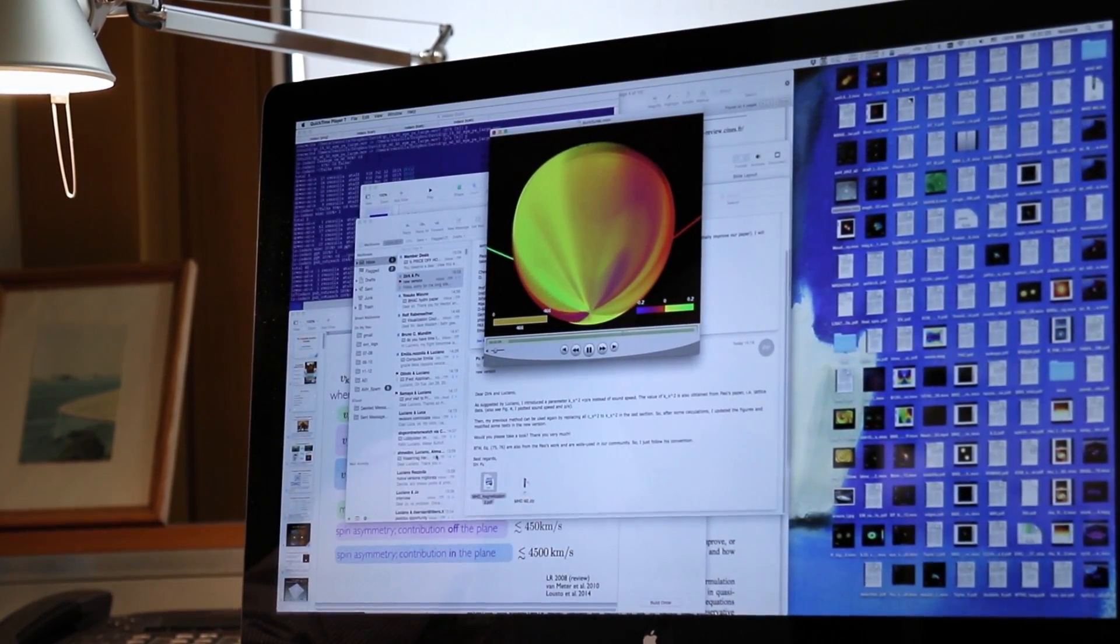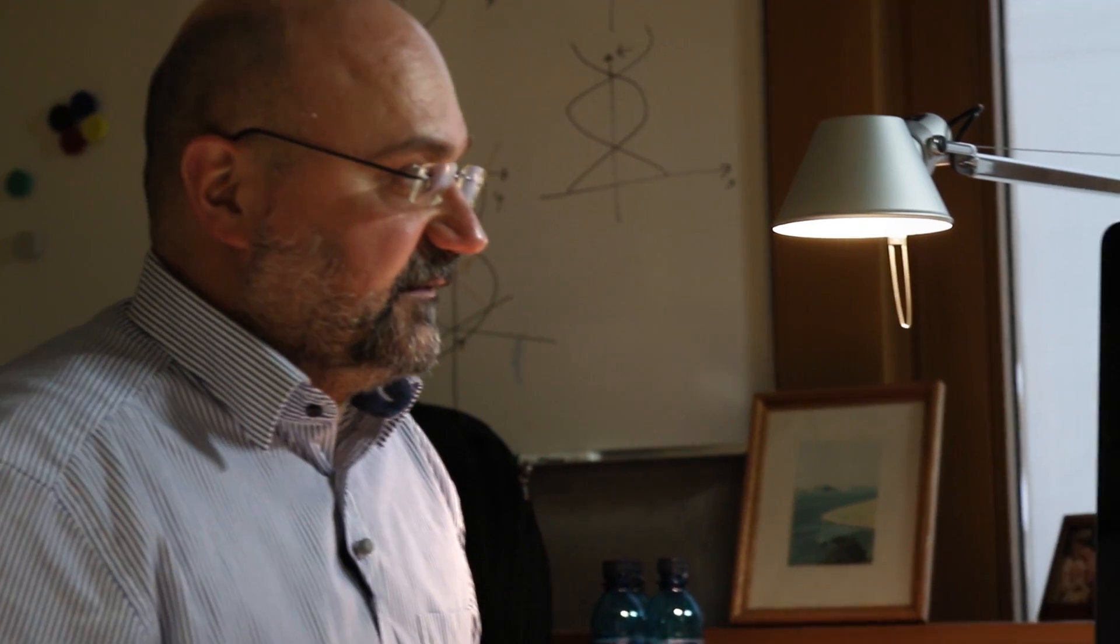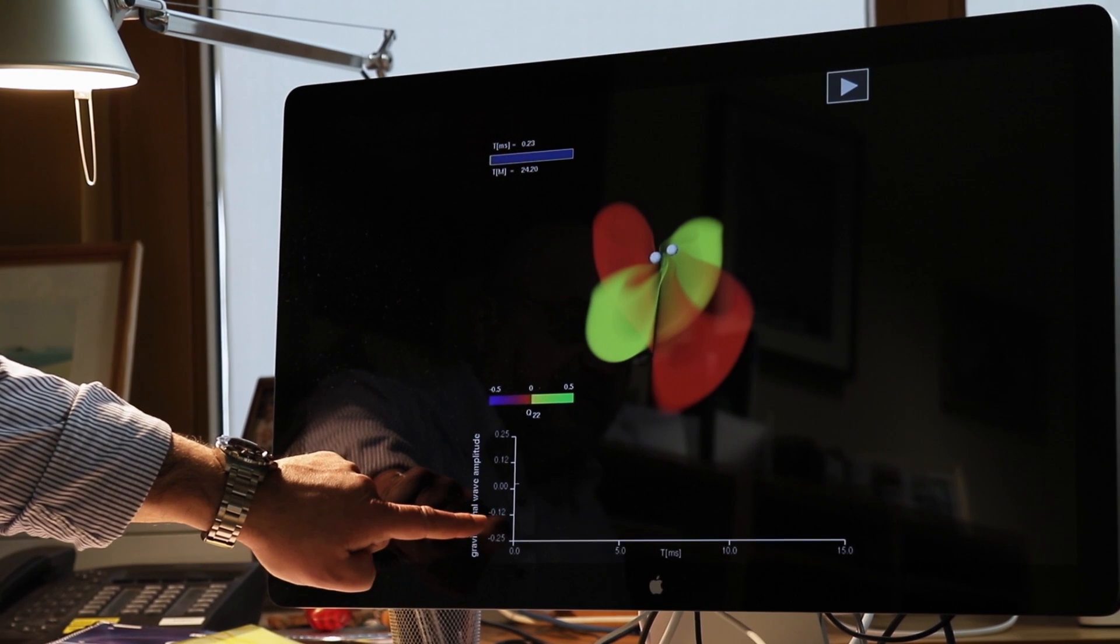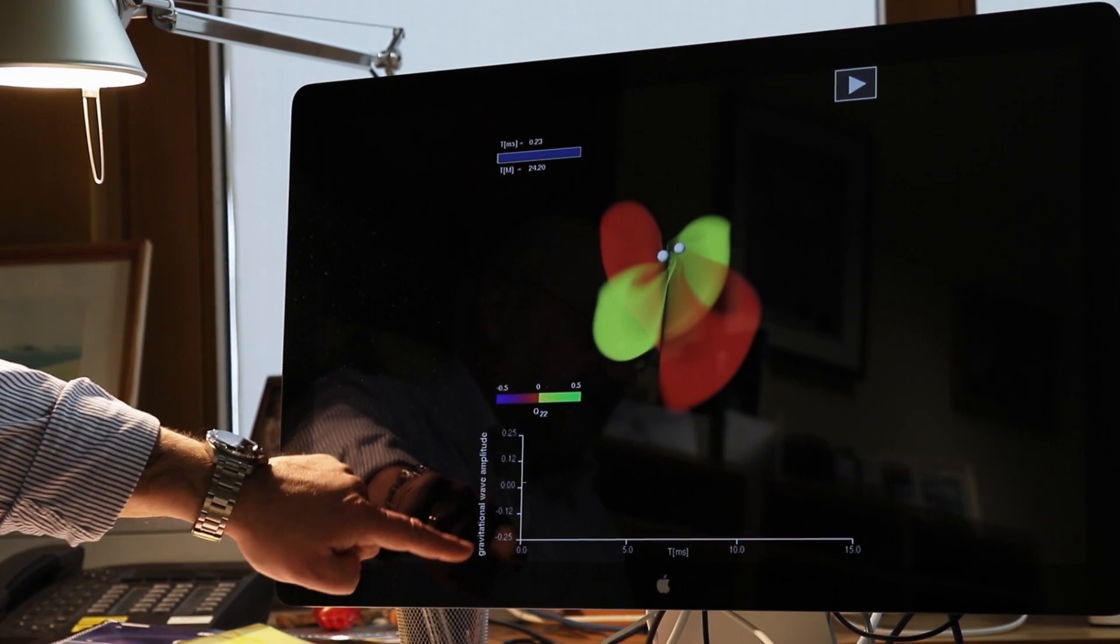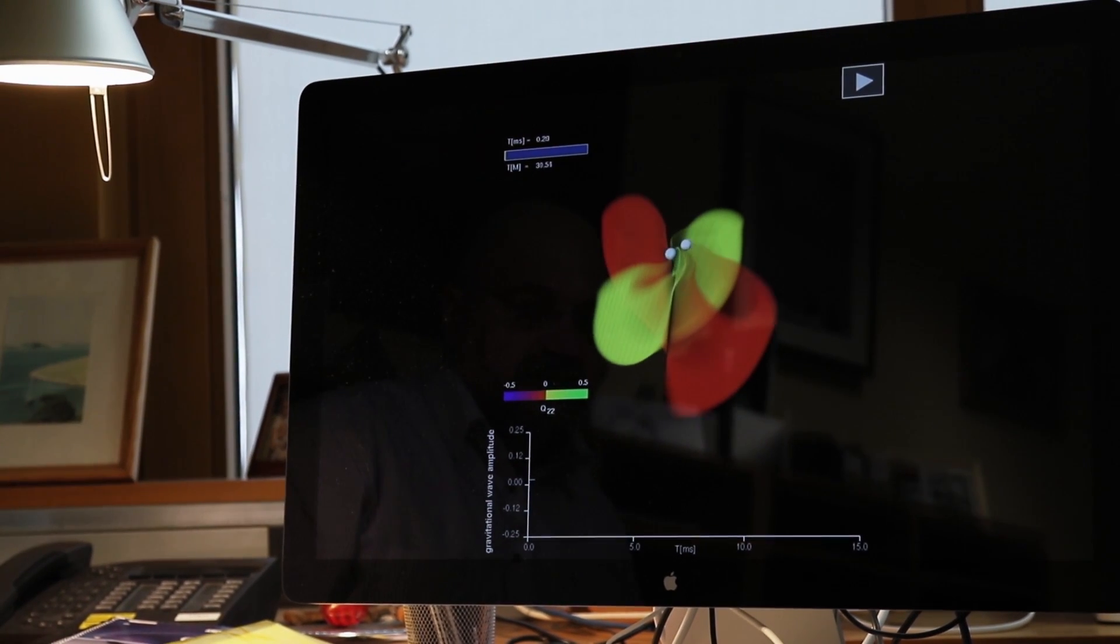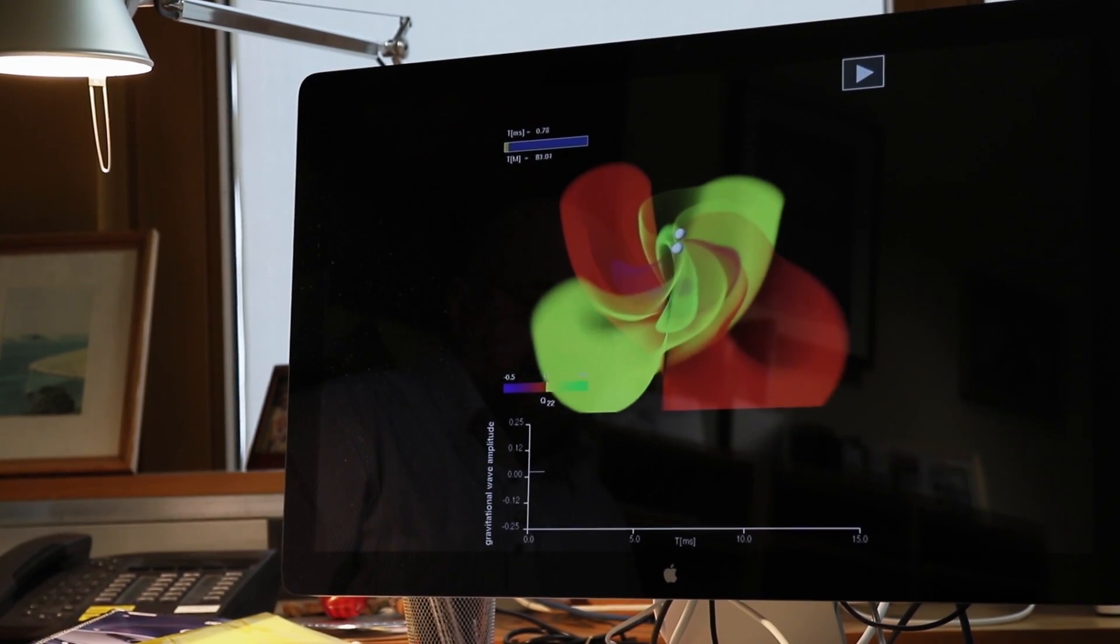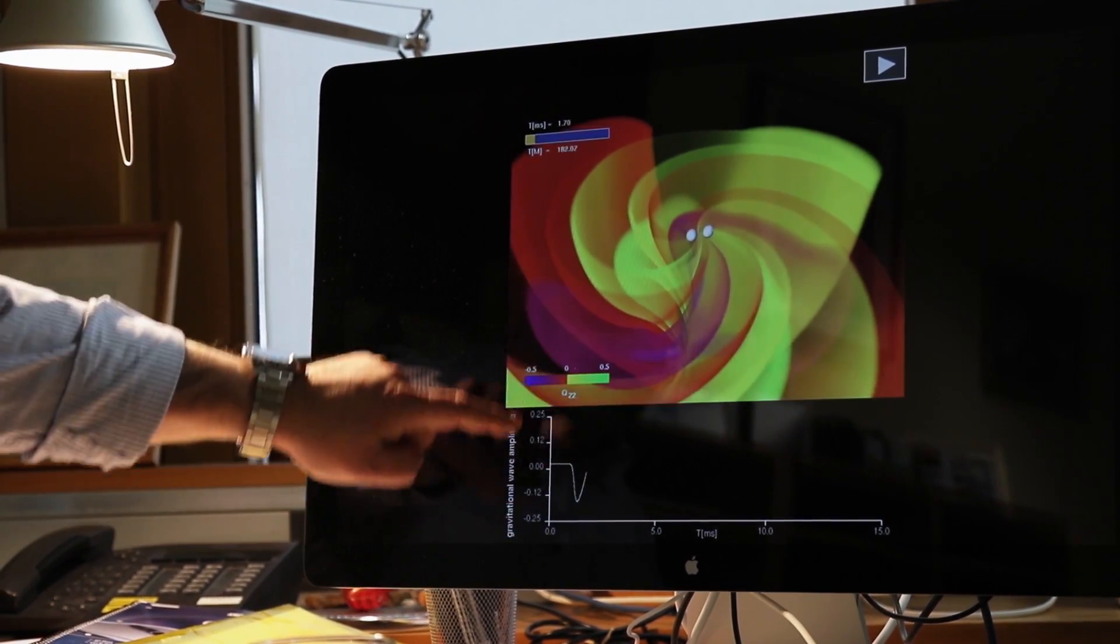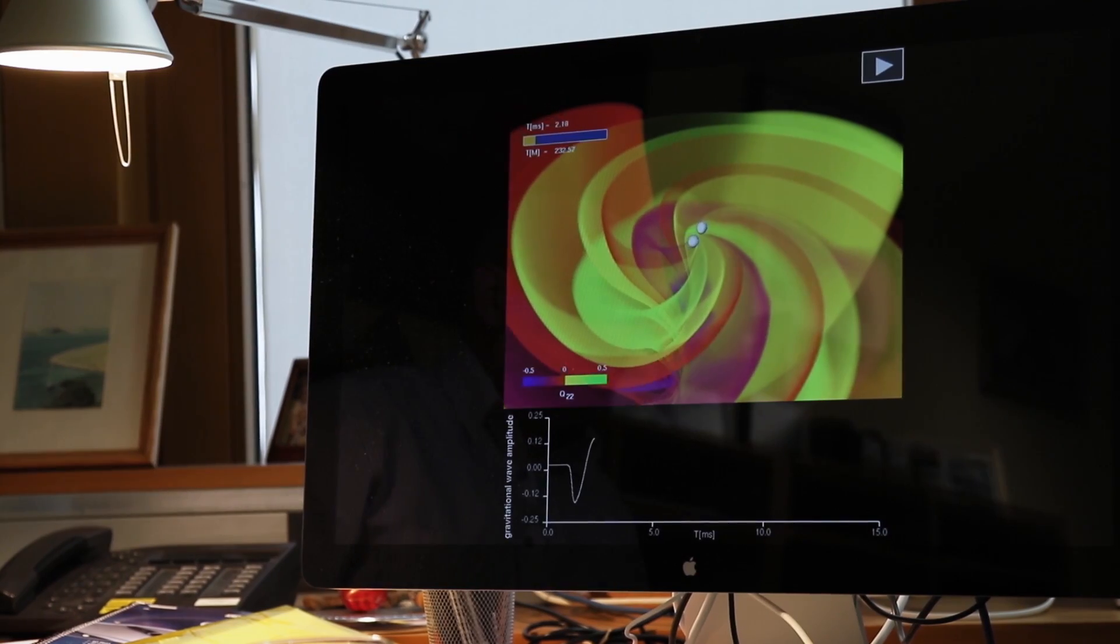May I show you something else? Here you have the two stars, which are these two little eggs. But these are the two stars. And here I'm showing you the gravitational wave as it would be measured by a detector from this. So at the beginning there is nothing, but then you start seeing the signal. And you see that the signal goes up and down just like you were expecting.